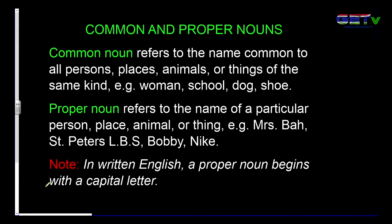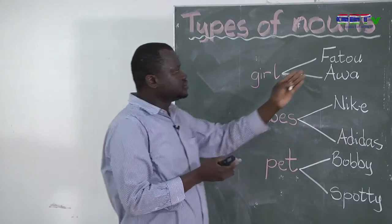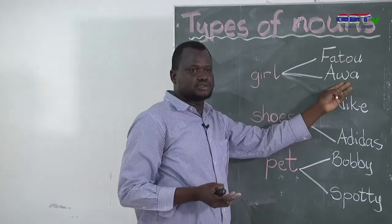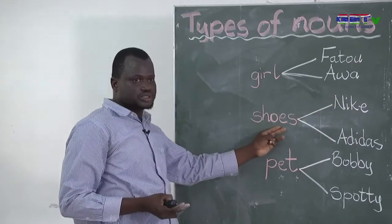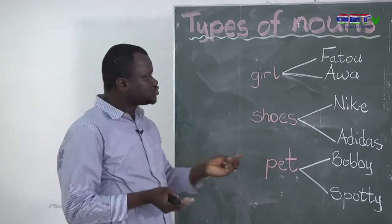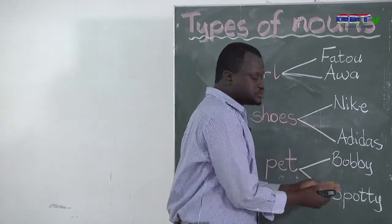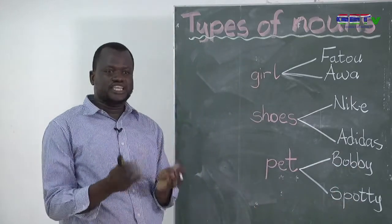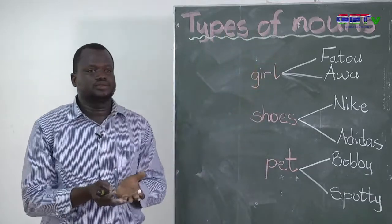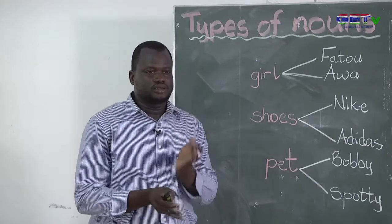This is our topic today — these are the two types of nouns we are going to look at. A common noun refers to the name common to all persons, places, animals, or things of the same kind. As you have seen in this example, girl is a common name to Fatou and Awa. Shoe is also a common name to Nike and Adidas. Pet is a common name to Bobby and Spotty.